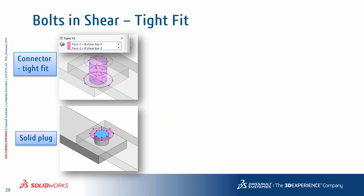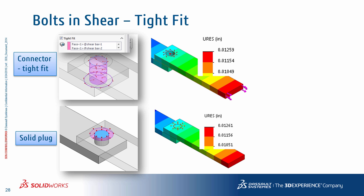Taking the same problem using the bolt connector with a tight fit option, then comparing that to using a solid bolt plug itself, we can see the results are slightly different. The tight fit bolt connector has a smaller displacement in shear — roughly about 1.5 percent difference — compared to the physically modeled part with contacts. This difference might seem small, but in reality it can scale up for more complex loading scenarios and stiffness variations of the connected parts.